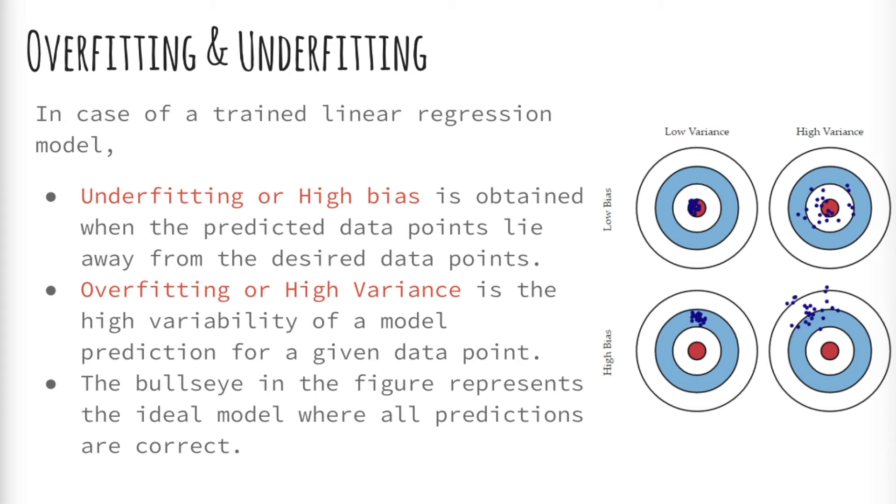If we had predicted a cubic function, the most optimal weight for the variable x cubed would be zero, enabling the machine learning algorithm to reduce the cubic to the more optimum quadratic.